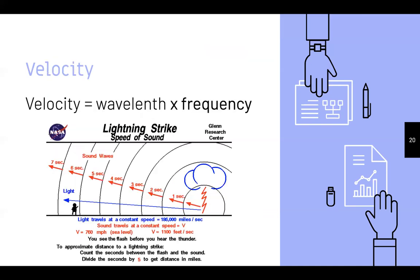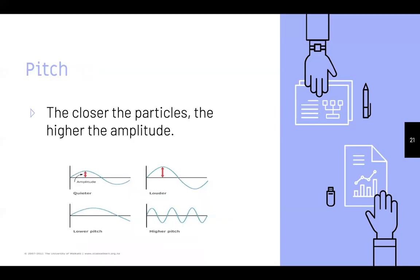Velocity equals wavelength times frequency. If we want to find the speed of a sound wave, we calculate the wavelength and the frequency and that gives us the velocity. We can also manipulate that equation. Down below is a picture showing that for every second you count after hearing a lightning strike, it's one mile away — so if you count eight seconds after thunder, the storm is about eight miles away.